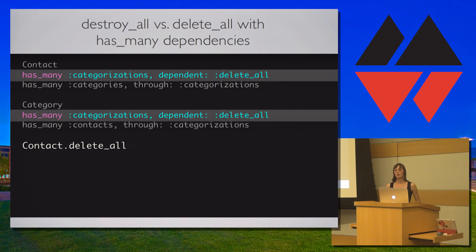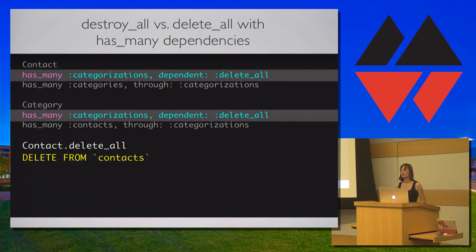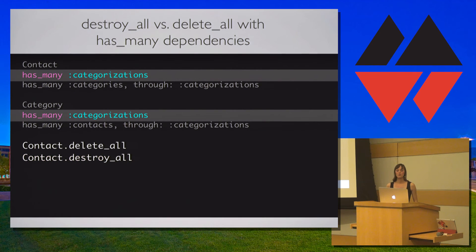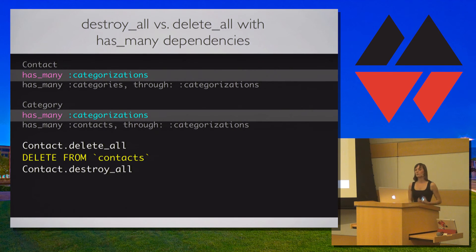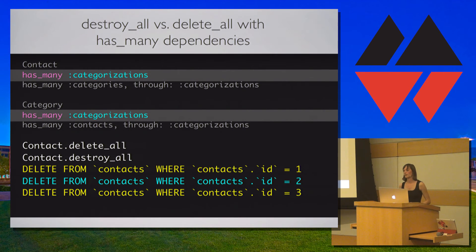If we instead run delete_all on contacts, only those contacts will be removed regardless of whether the dependency is set to delete_all or destroy. No categorizations will be removed when using delete_all on contacts. delete_all does not instantiate individual contacts and will not fire callbacks — all contacts are removed at once. If no dependency is set, both destroy_all and delete_all ignore related categorizations and only remove the contacts; the difference is how they remove those contacts.